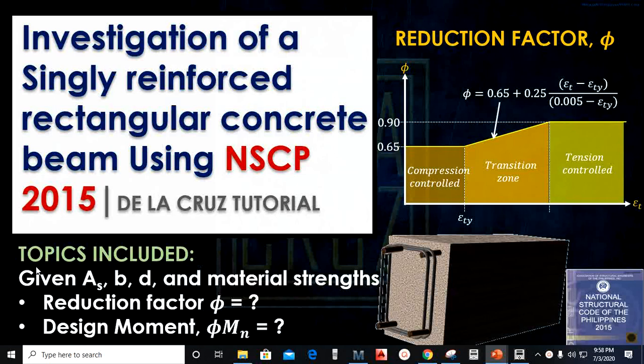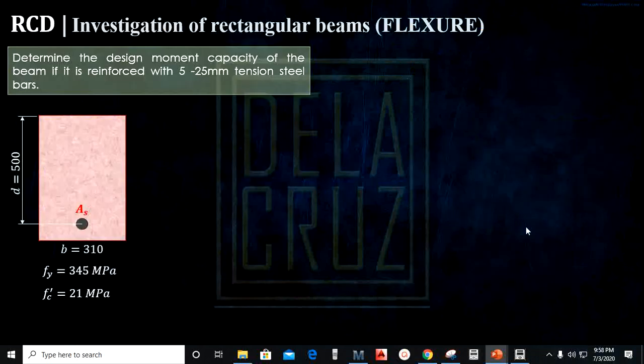These are the topics included. In this video, we will learn how to use the reduction factor that is given by the NSCP 2015 code and we will also learn how to compute the design moment φMn of rectangular singly reinforced beam. Without any further ado, let's start to solve the problem.